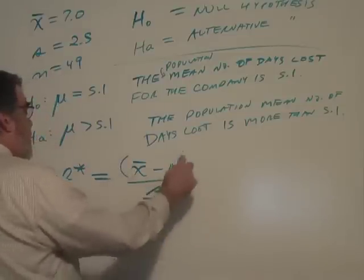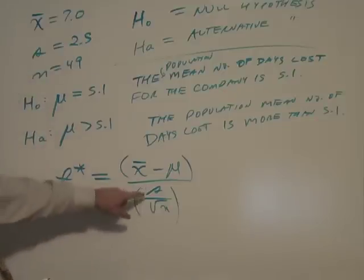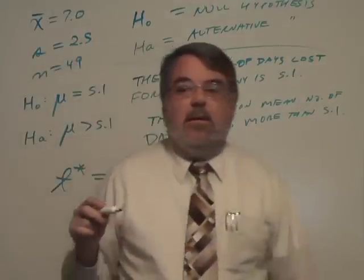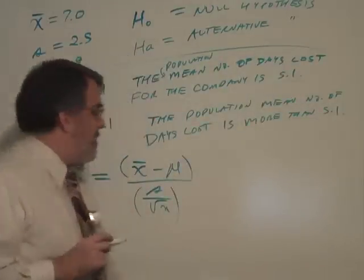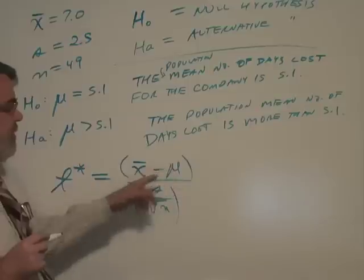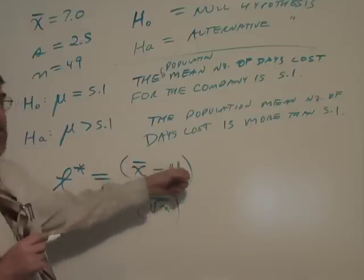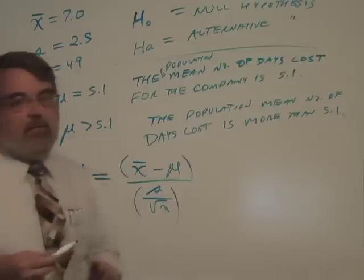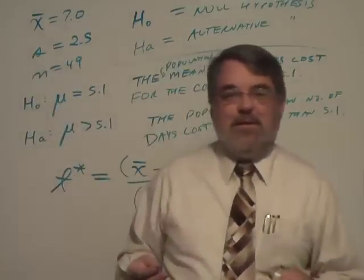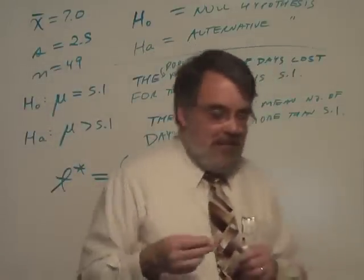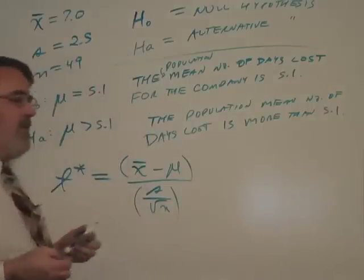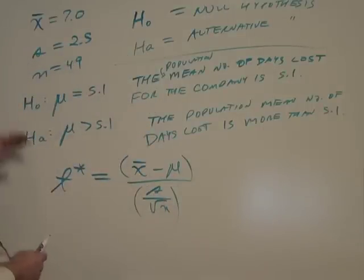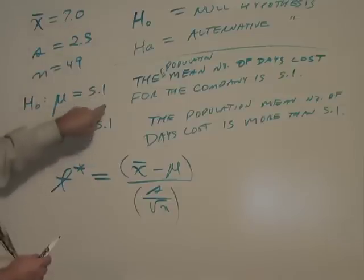So let's use some parentheses here to organize it. You hopefully recognize s divided by square root of n as being the standard error of the mean. And this is the difference between a measurement and a population mean. So this may remind you of the z-score calculation that we did earlier. And in fact, literally it is. It's measuring the number of standard deviations that this result is away from that result.